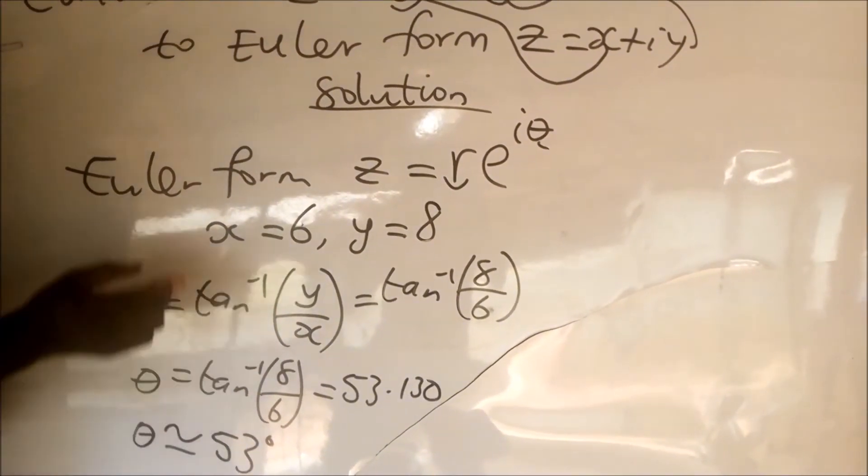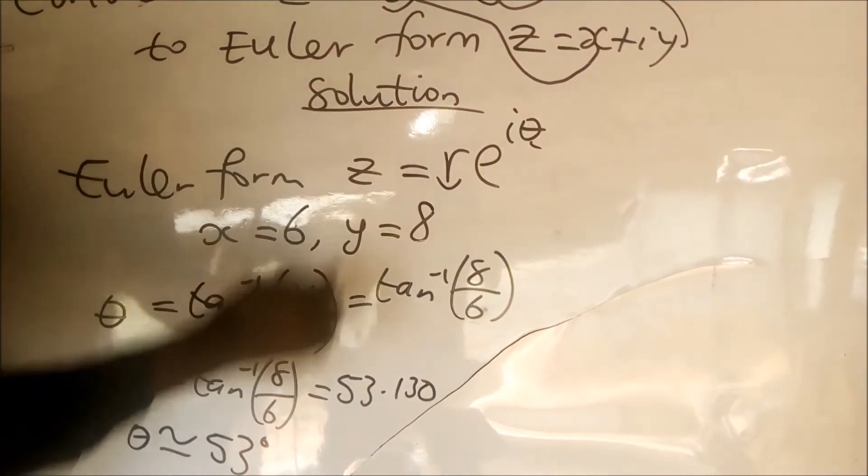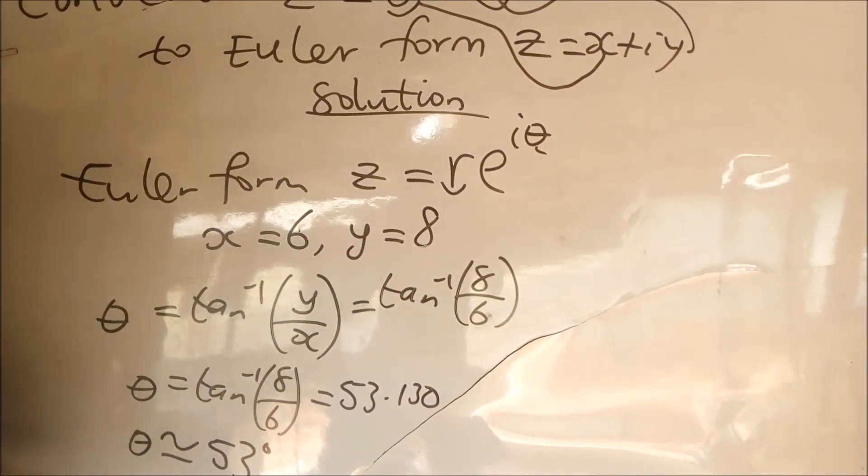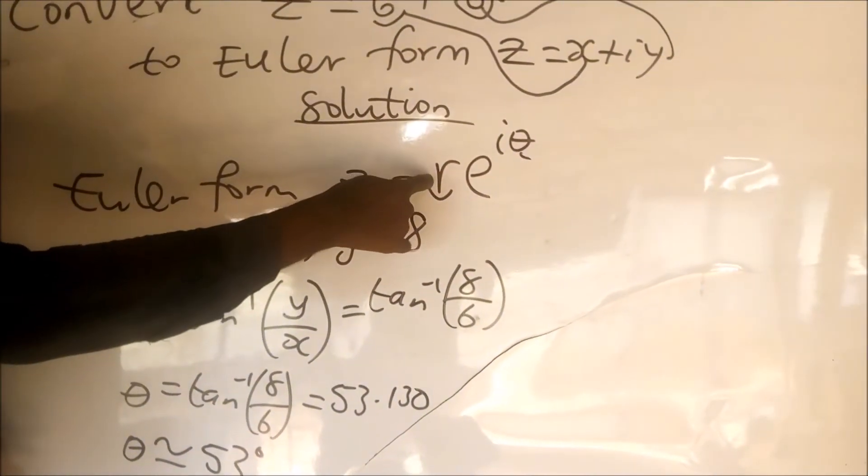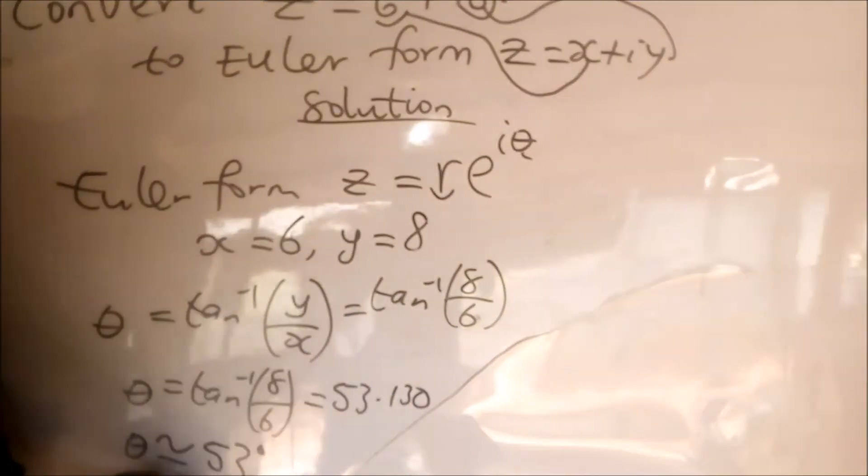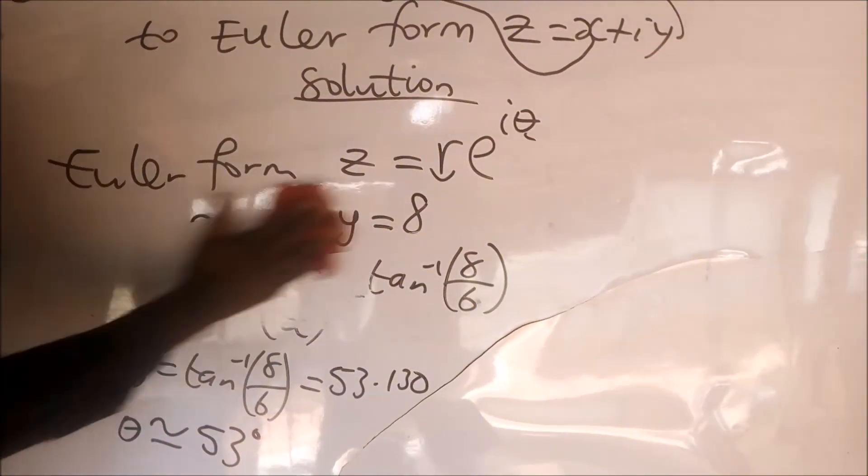So now we have the values of the modulus and the argument as 10 and 53. We are going to substitute the two of them into this expression. We have our 10 as modulus and 53 as our argument. Once we have that, our question is already solved.